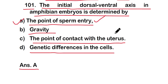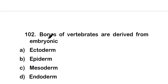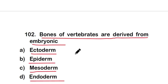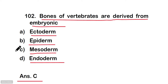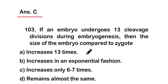Question 102: Bones of vertebrates are derived from embryonic (a) ectoderm, (b) epiderm, (c) mesoderm, or (d) endoderm. The correct answer is option C — mesoderm. So bones of vertebrates are derived from embryonic mesoderm.